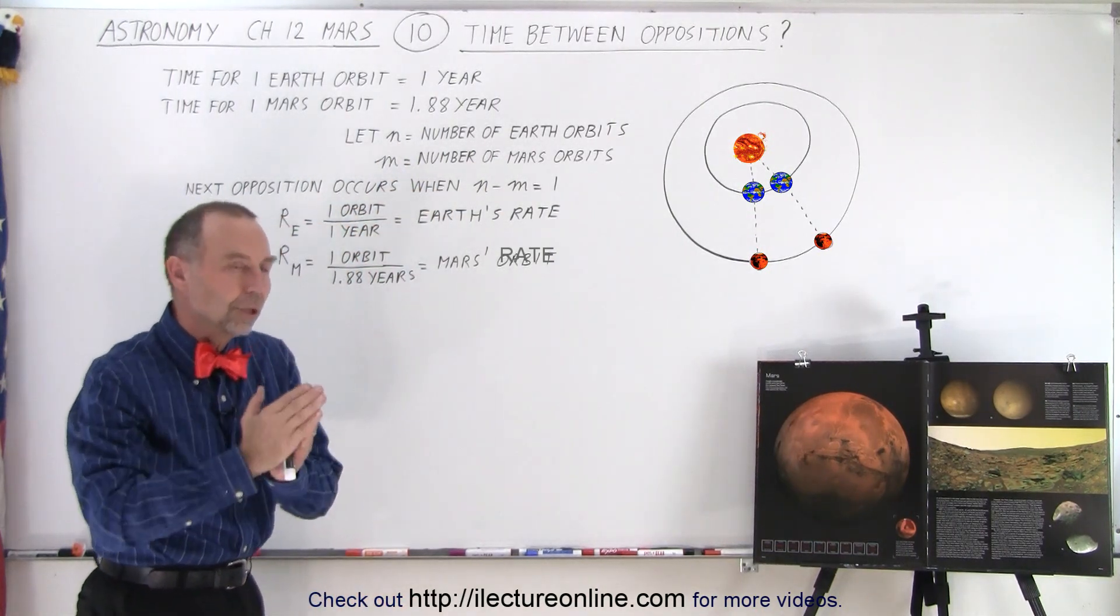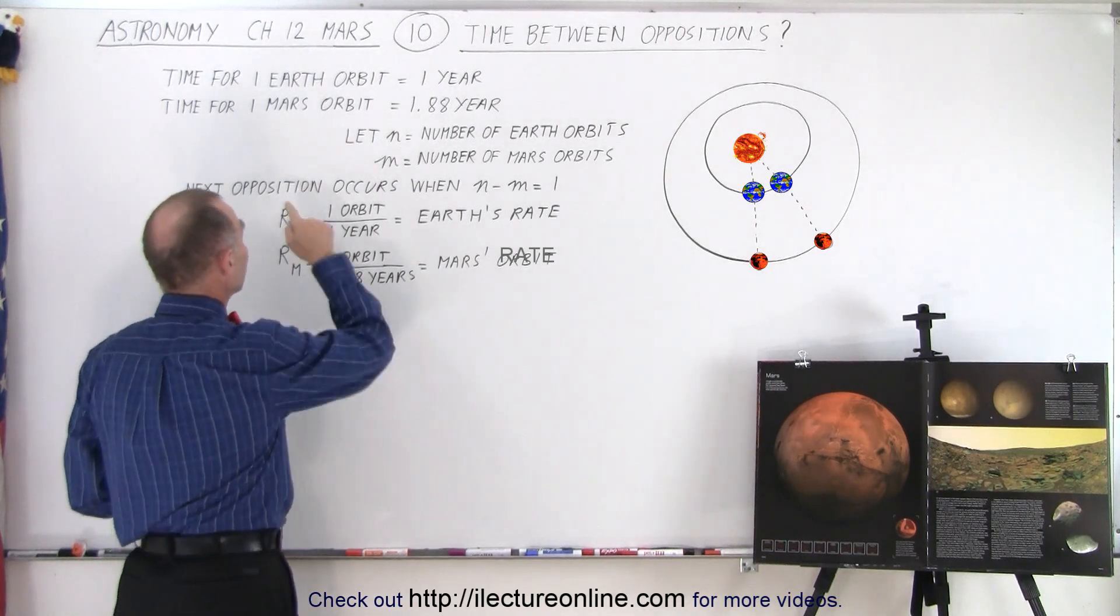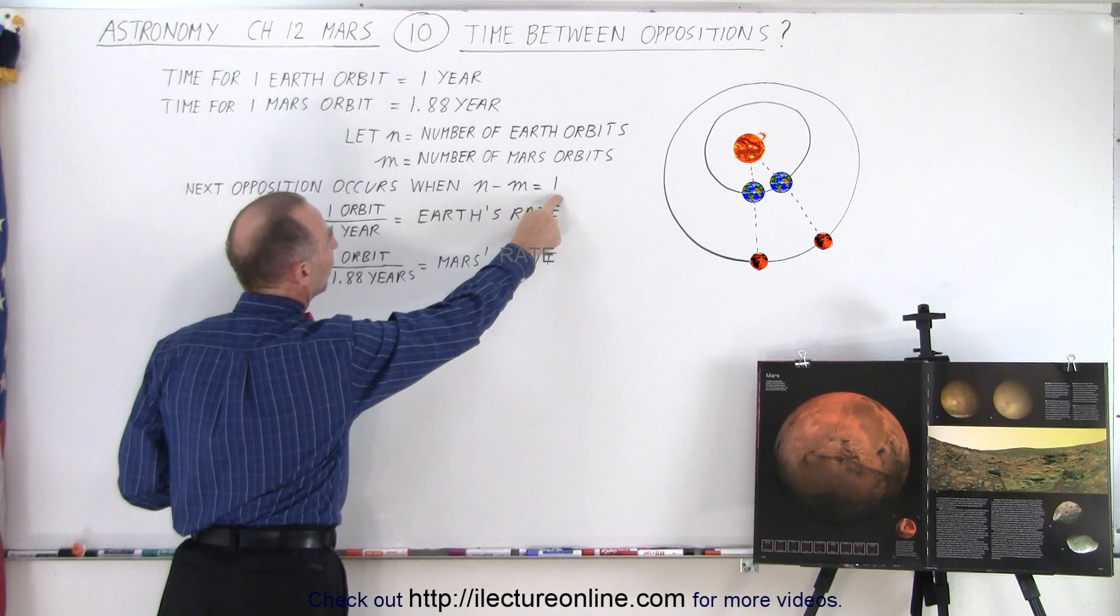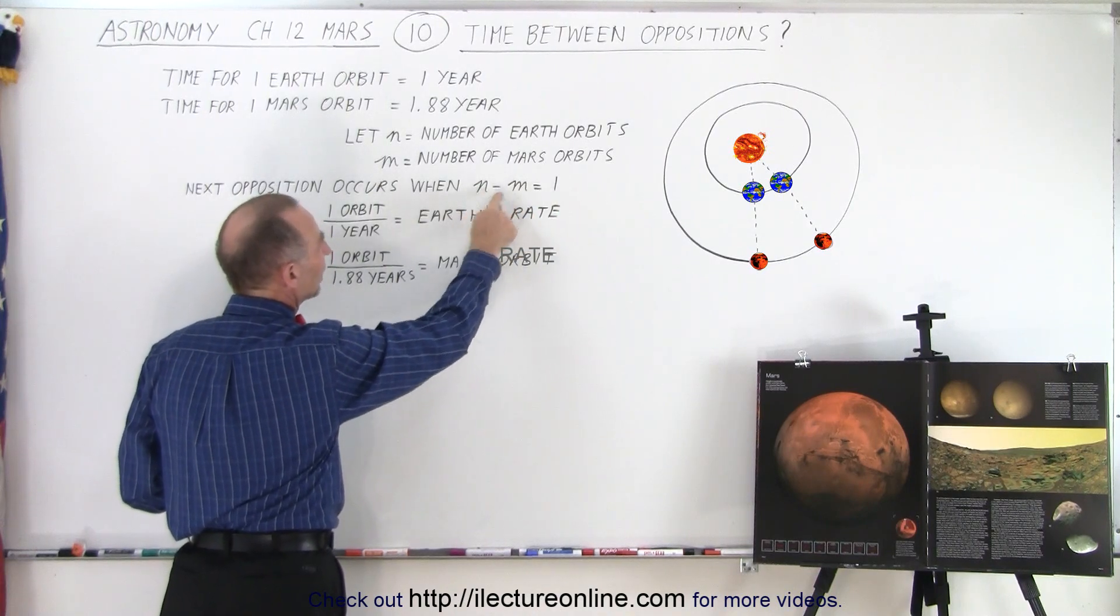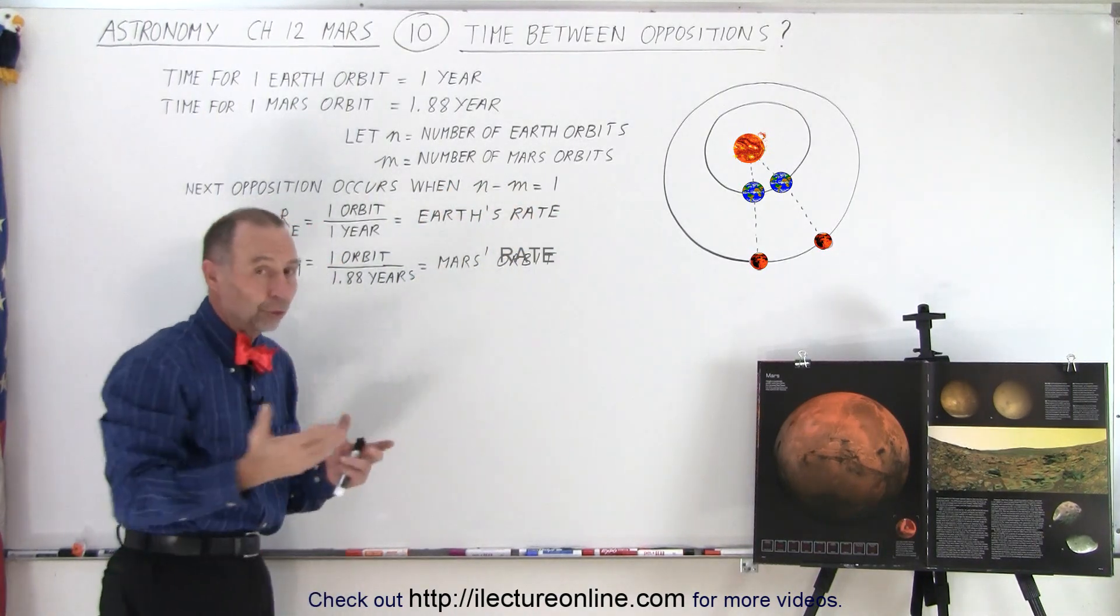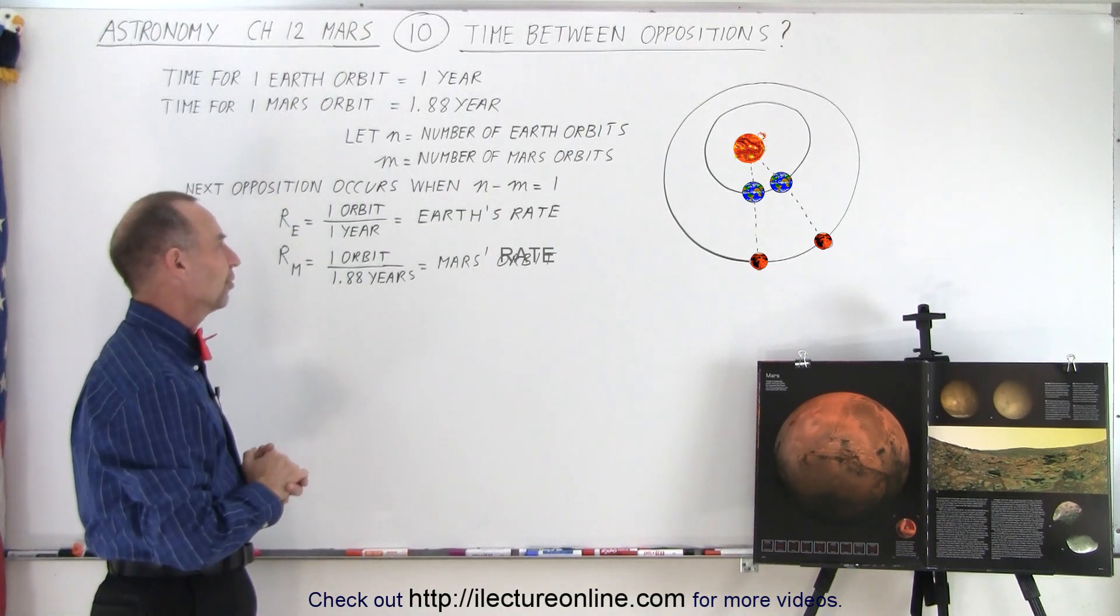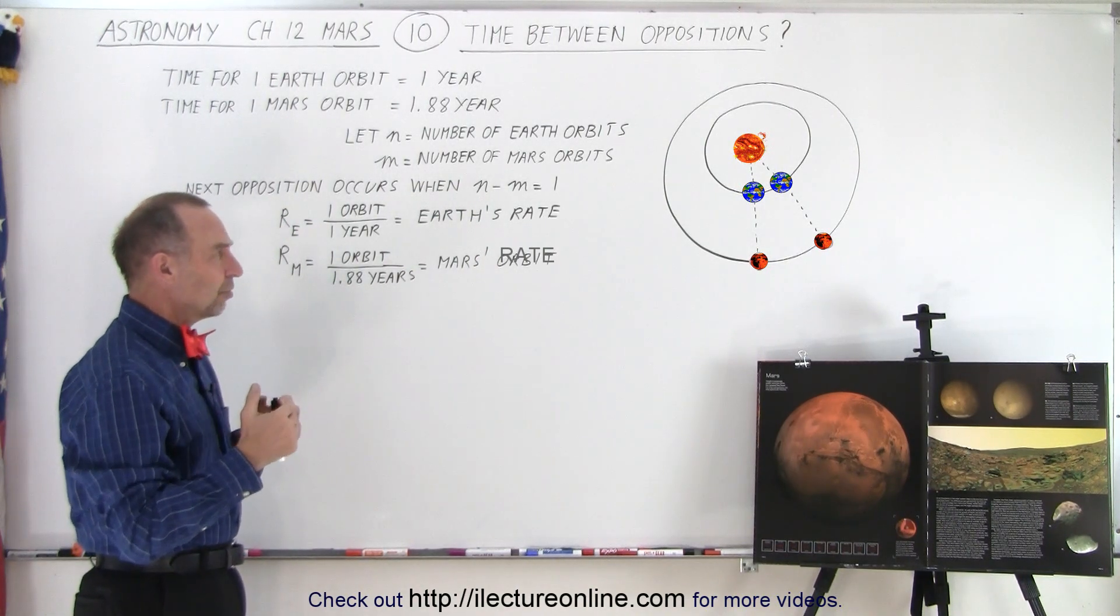we can let n equal the number of Earth orbits and m equal the number of Mars orbits, from one opposition to the next. And so, the next opposition will then occur when n minus m is equal to one, when n is one greater than m, when the number of Earth orbits around the Sun is one more than the number of Mars orbits. So to calculate that,